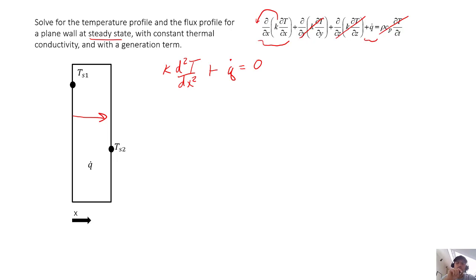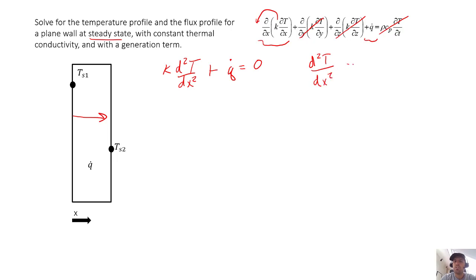It's convenient to rearrange this a little bit. We want to lump our constants together. Since k and q-dot are constants, it's helpful to separate and integrate with those constants on the right-hand side. Doing that rearrangement, we get the second derivative of temperature with respect to x squared equals minus q-dot over k.